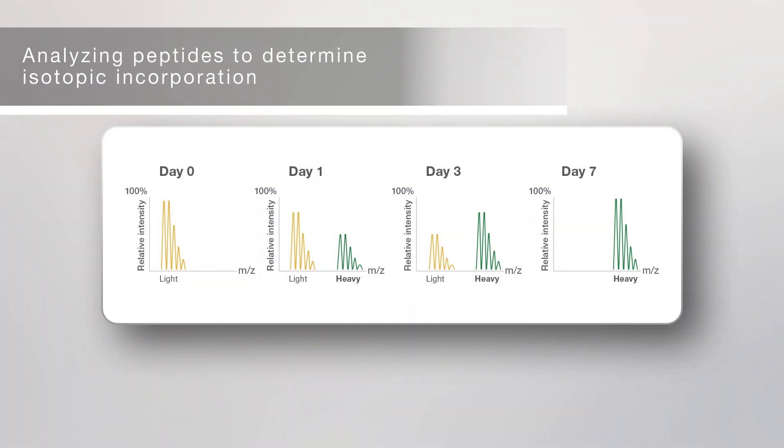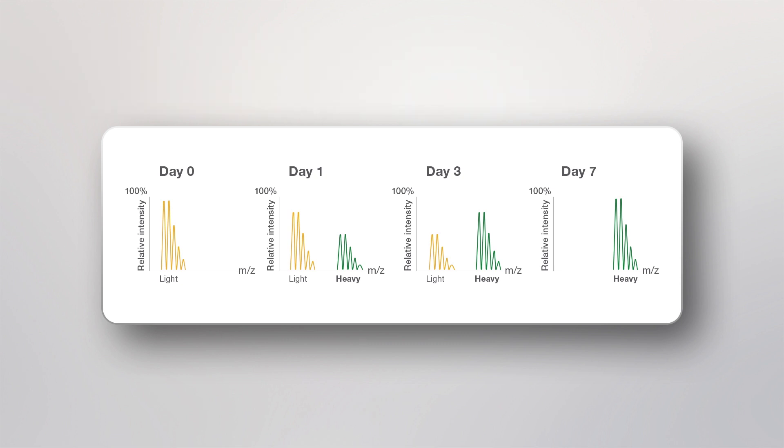The percent incorporation is determined by assessing the peak area of light and heavy peptides observed in the LC-MS analysis. This is facilitated by database searching of tandem-MS peptide spectra using the heavy amino acid masses as dynamic or variable modifications.